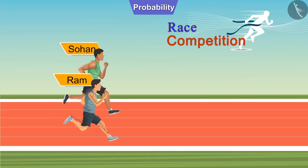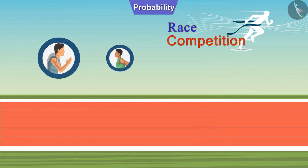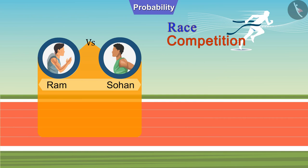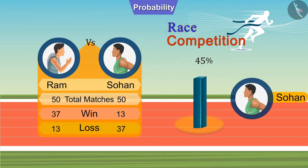Ram and Sohan participated in a race competition in which these are the only two players. Can you tell what is the probability of Sohan winning in this race? We can easily say 50%. But if I tell you that 50 matches have already been held between Ram and Sohan, in which Ram has won 37 times and Sohan 13 times, will you still say that Sohan has a 50% chance of winning? No.